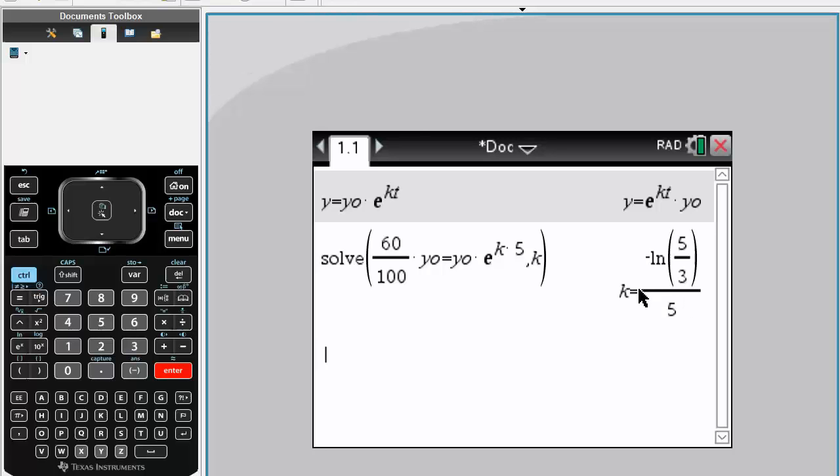Now the question is wanting us to solve to determine the half-life, the amount of time that it would take for the sample to decay to half of the amount. So we do almost the same thing as this, but instead we're going to solve for t.